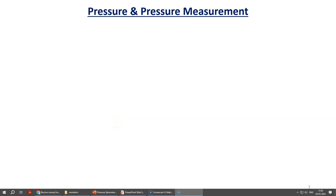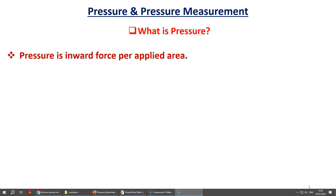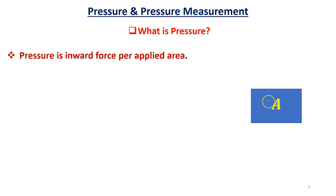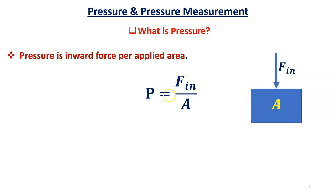Today I will talk about pressure and pressure measurement. Pressure is inward force per applied area. Here the blue color box is an object, the object has area A, and force is acting on that object. F_in is the inward force acting on the object, so pressure is F_in divided by area.